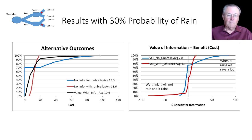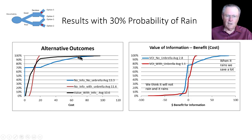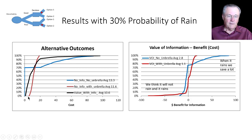So here are the results — we're going to go through the model later on. There are three alternatives. The alternative with information is shown as the black line here, and I'm going to be consistent with these colors throughout. It has a cost of 10.6. With no information but with the umbrella is shown in red — if I buy the umbrella, that's basically the cost of the umbrella only. There's no cost for cleaning my clothes because I have the umbrella.